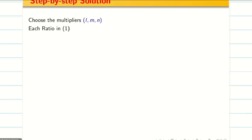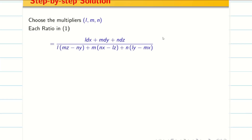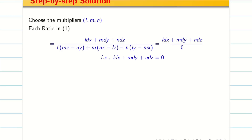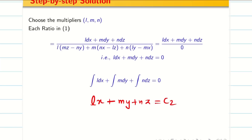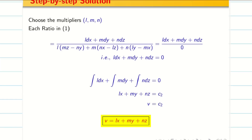The second multiplier is L, M, N. Multiplying by L, M, N gives L·dX + M·dY + N·dZ in the numerator, with denominator automatically 0. Since the denominator is 0, the numerator equals 0. Integrating: L is constant, so integration of L·dX is L·X; similarly M·Y and N·Z. Therefore LX + MY + NZ = C₂. Immediately take this as V: V = LX + MY + NZ.